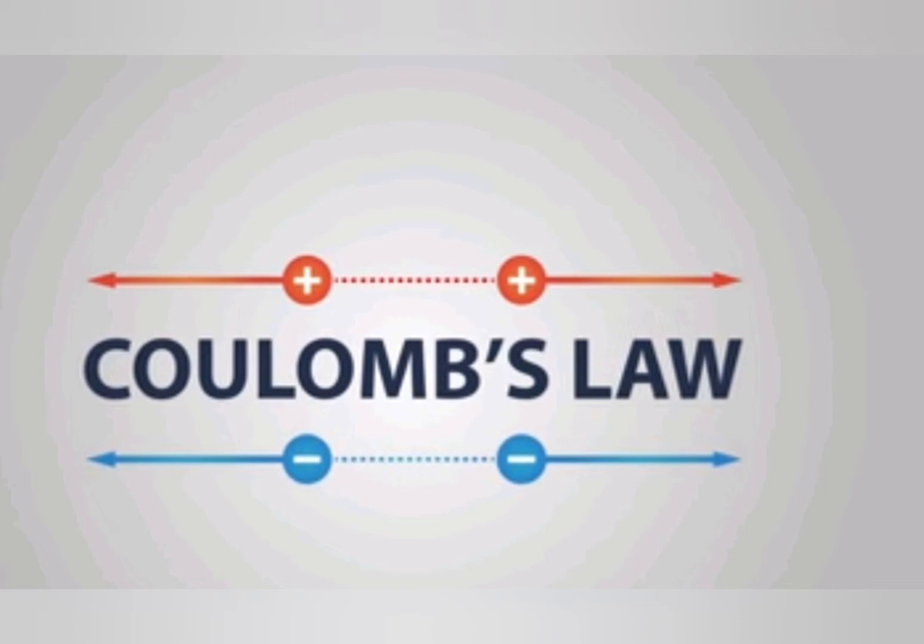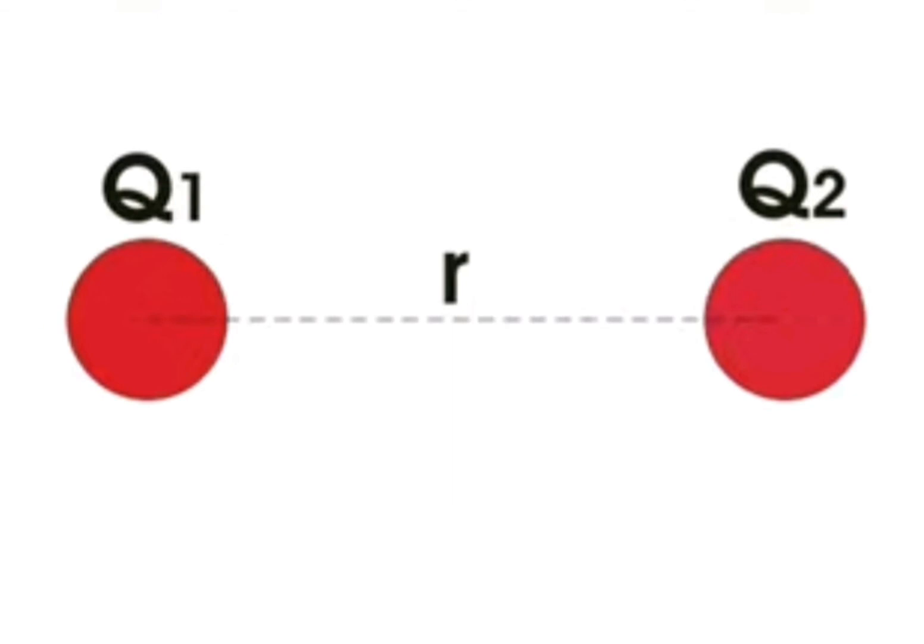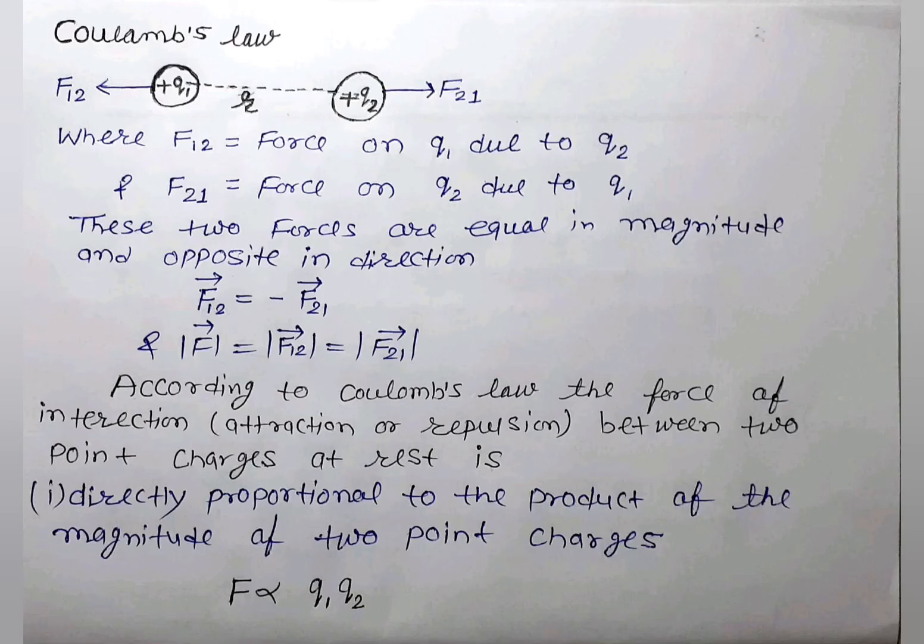Suppose you have two point charges, one of them is positive Q1 and another is positive Q2, and the distance between their centers is R. Both charges are positive, so they will repel each other.